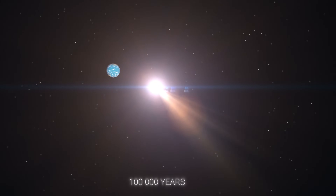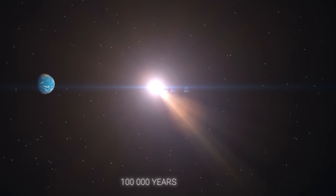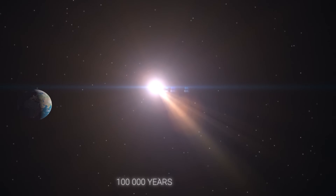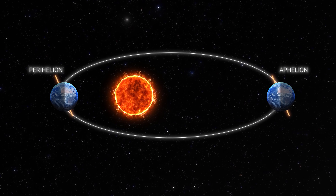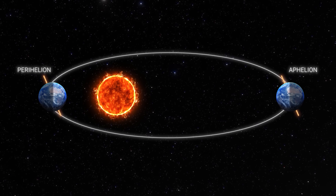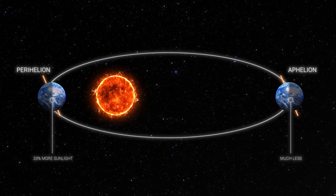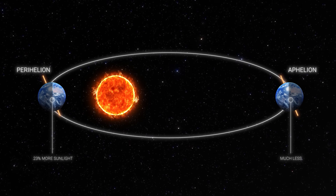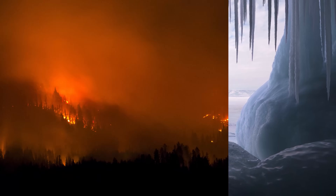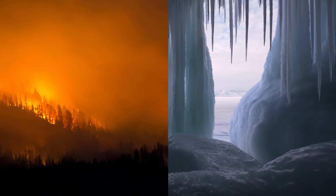But in about 100,000 years, according to the theory of cycles, the shape of the orbit will become more elliptical. Consequently, the Earth will receive 23% more sunlight at perihelion and much less at aphelion, which will lead to very hot summers and frosty winters.